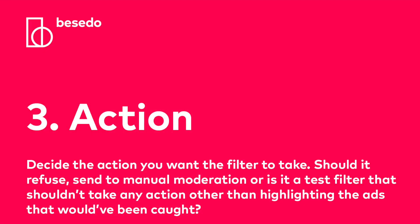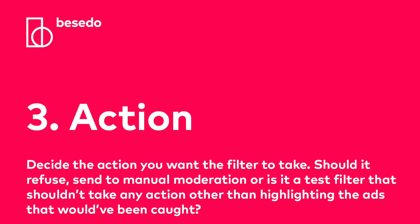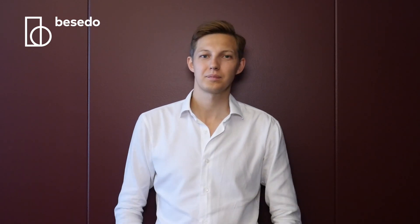Step 3: action. Here is when you decide on the action you want the filter to take. Should it refuse, send to manual moderation, or is this just a test filter that shouldn't take any action other than highlighting the ads that would have been caught? Testing the filter with a no-action decision is always a good idea to make sure the filter is working just as you hoped — I will touch on this later in the video as well. In our content moderation tool Implio, the default setting is to accept any content that does not match the filter, however you are in full control of the content that does match.